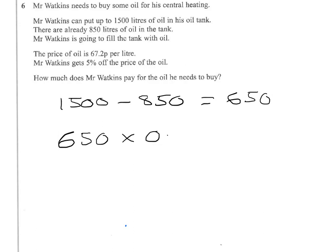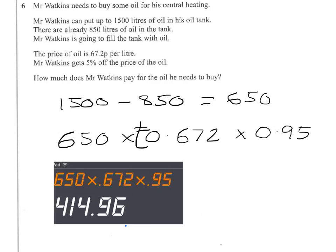If I change that into 0.672, that will give me the amount in pounds. So, I'll do that first. If I want to do this in one go to take off 5% — if I take off 5%, I'll have 95% left. So, if I multiply through by 0.95, all in one go, I'll get my answer in pounds. So, that gives us £414 pounds 96 pence.